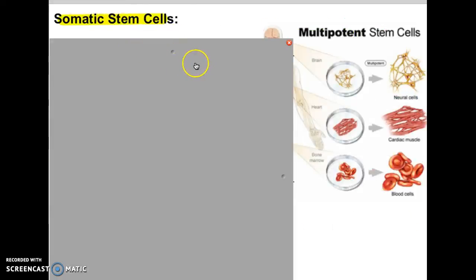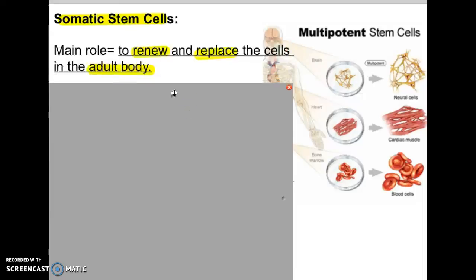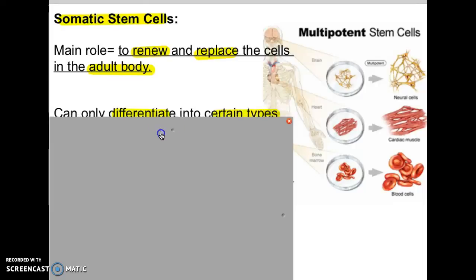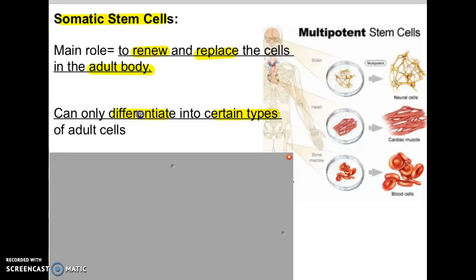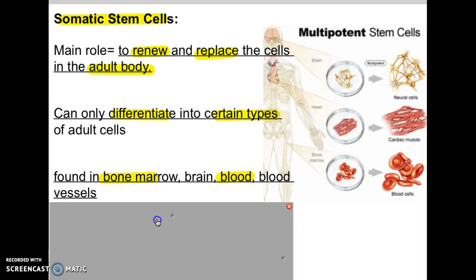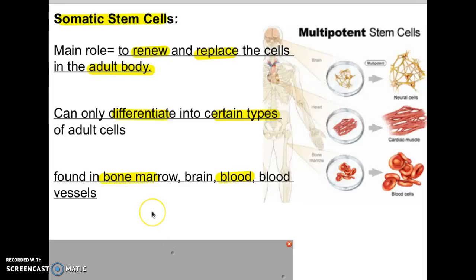Somatic stem cells are the stem cells currently in you right now. What those stem cells do is help renew and replace cells in an adult body. They can only differentiate into certain types — not everything. You can find somatic stem cells in your bone marrow, some parts of your blood, and in your brain.